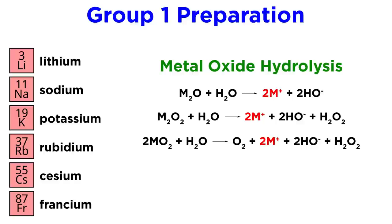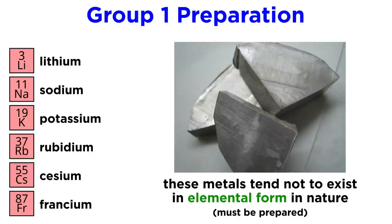Additionally, these metal oxides can undergo hydrolysis to yield metal cations, hydroxide ions, and in some cases hydrogen peroxide and oxygen gas. Due to their high reactivities, these metals tend not to exist in pure elemental form in nature, which is what makes their preparation necessary.